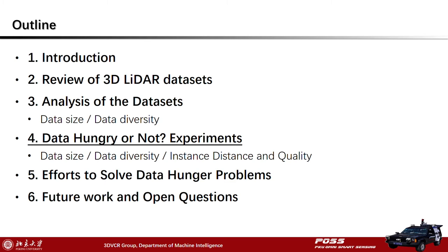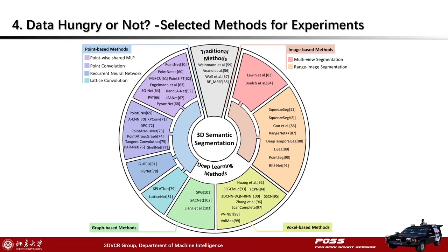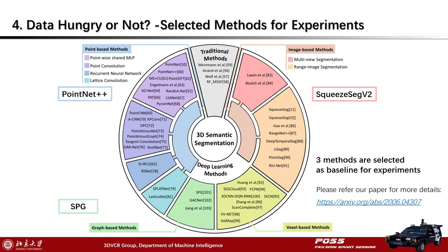After analyzing the datasets, we give an experimental study to the question: data hungry or not? We designed several experiments to answer this question from different aspects — data diversity, data size, instance, distance, and quality. We made a survey of existing 3D segmentation methods, and for experiments we selected three baselines from three types of deep learning models: the point-based method PointNet++, the range image-based method SqueezeSeg v2, and the graph-based method SPG.